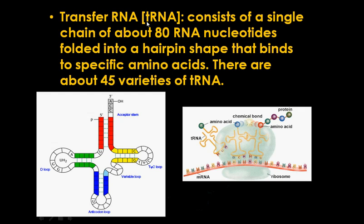Transfer RNA, often abbreviated as tRNA, consists of a single chain of about 80 RNA nucleotides that are folded into a hairpin shape. That hairpin shape represents a T, which is one reason we call it tRNA. There are about 45 different varieties of tRNA. Their main function is to have a specific codon attached to one end and an amino acid specific to that codon attached to the other end. This allows the cell to know what order, or what codon, should code for a specific amino acid. This all happens as chemical reactions, which allow only specific amino acids to be joined to specific tRNAs.